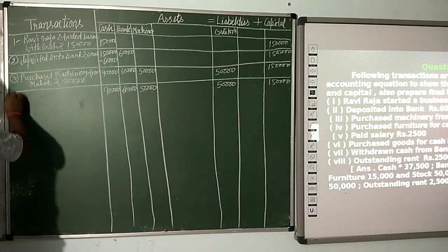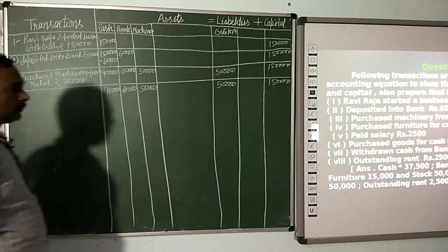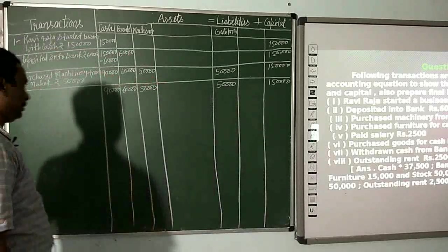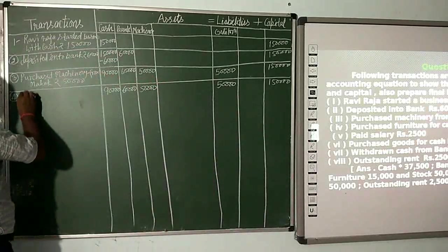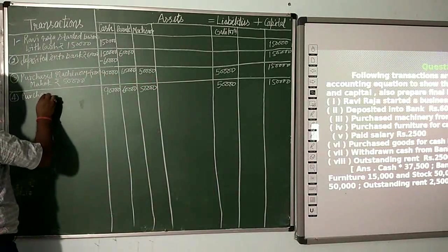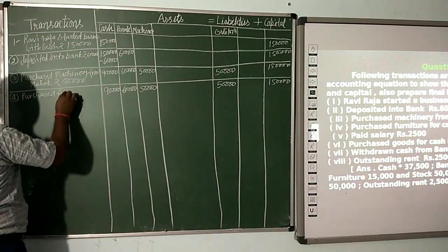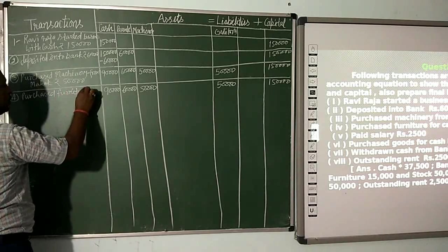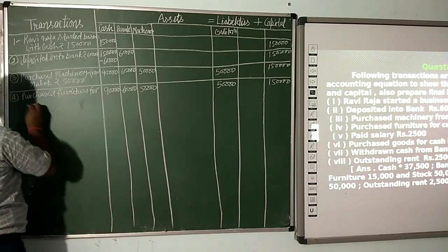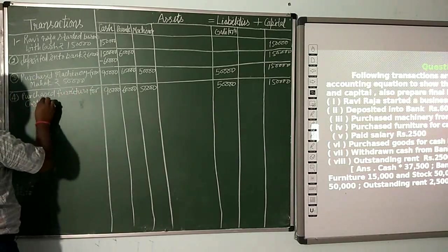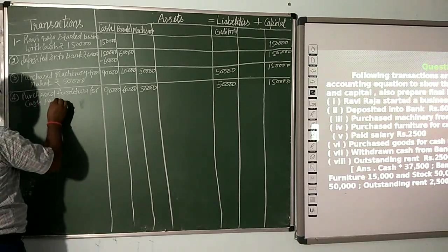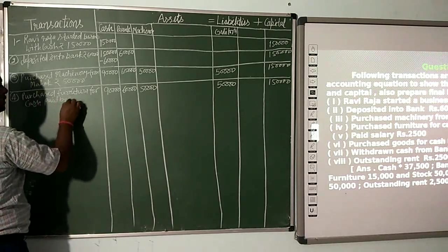Now the fourth transaction: purchase furniture for cash paid by cheque Rs. 15,000.